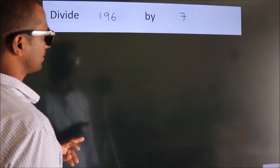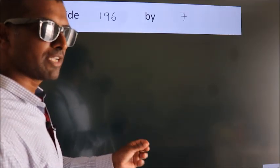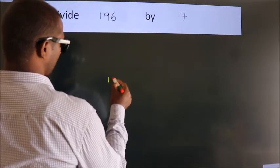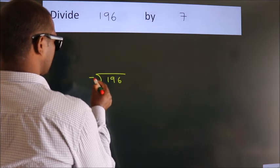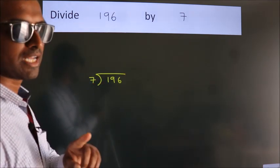Divide 196 by 7. To do this division, we should frame it in this way: 196 here, 7 here. This is your step 1.